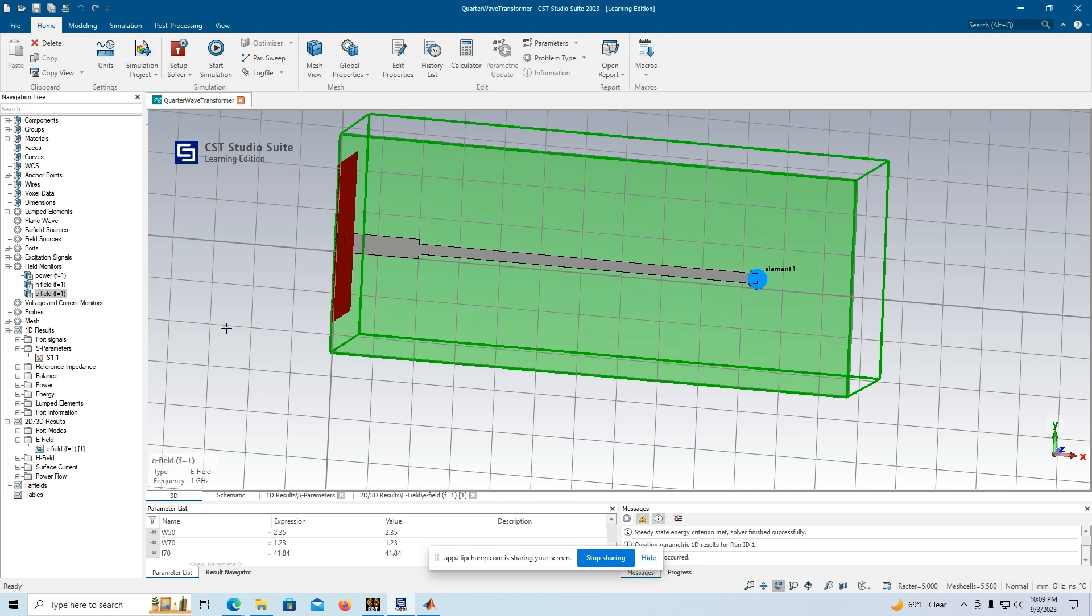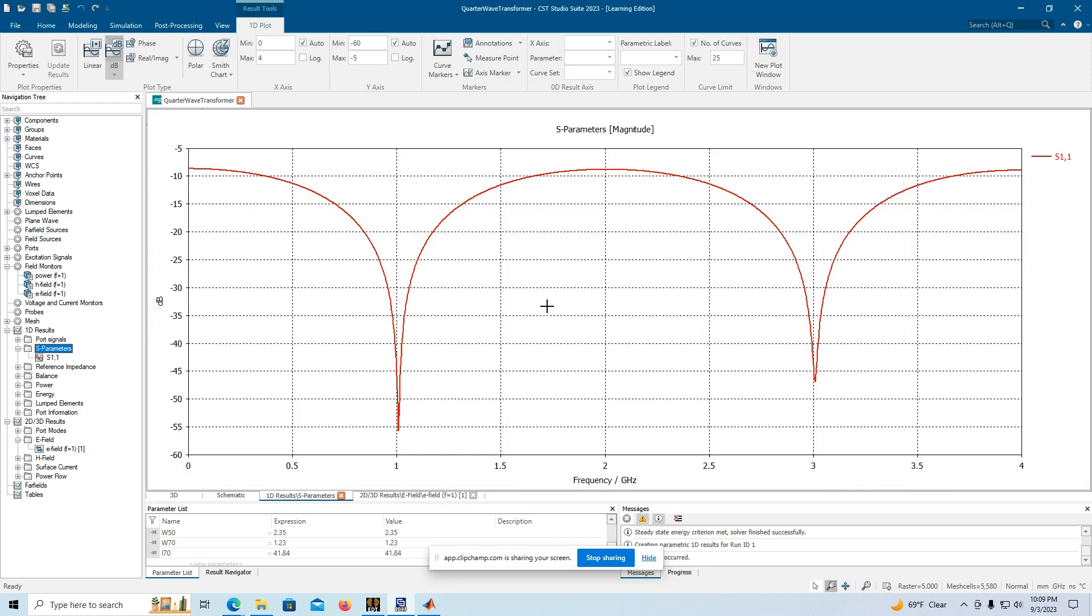After the simulation was run, we have the S parameter S11 given here, and you can see it's a perfect match, or near perfect, here at 1 gigahertz, and also at 3 gigahertz, and every odd multiple as you go higher and higher.